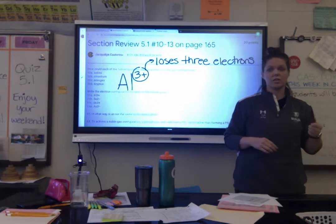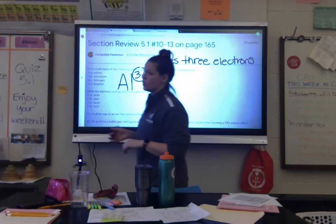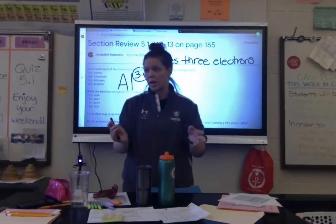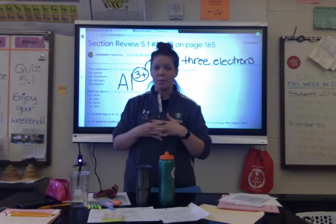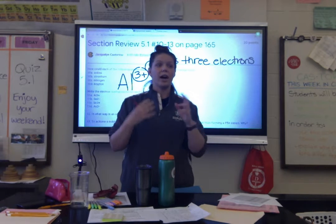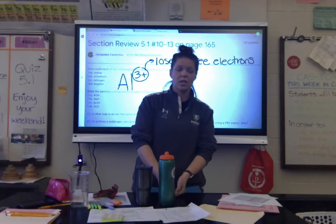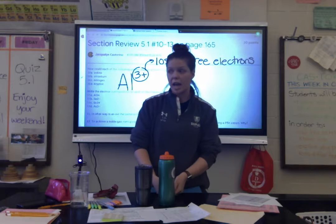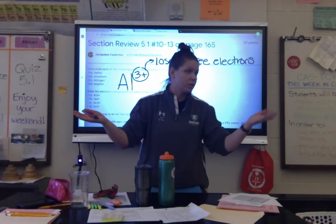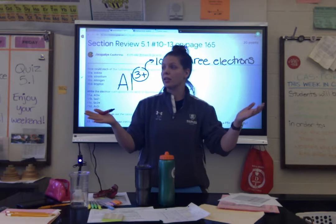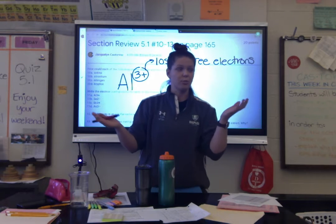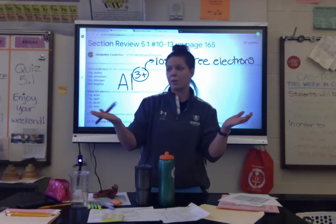This is an ion where we lost 3 electrons, so we go from 13 down to 10 electrons. Which element on the periodic table has atomic number 10? Neon. How do we know? Because in a neutral atom, the electrons equal the protons, which equal the atomic number. So Al³⁺ has the same electron configuration as neon — I'm putting that in brackets because aluminum doesn't turn into neon, it just has the same electron configuration.